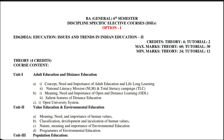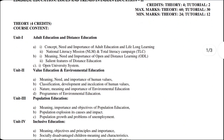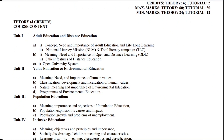We will analyze the syllabus of option first and also provide the guess paper. The course is BA General Sixth Semester Discipline Specific Elective Course, Option First: ED620D2A — Education Issues and Trends in Indian Education Part Second. You have six credits for theory and two tutorial credits. Maximum marks for theory is 60, minimum is 24. Maximum marks for tutorial is 30, minimum is 12.